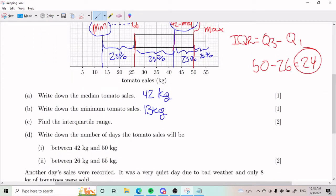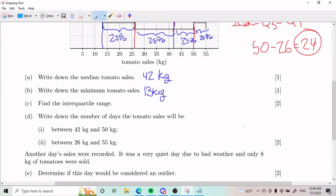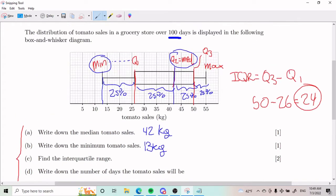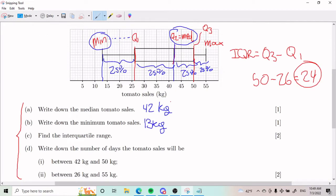Part D gets a little more juicy. We need to write down the number of days the tomato sales will be between 42 and 50, and between 26 and 55. Parts A through D is all about knowing how to read a box and whisker plot. What I explained at the beginning with the percentages—the min, the Q1, the Q2, the Q3, and the max—becomes crucial right now.